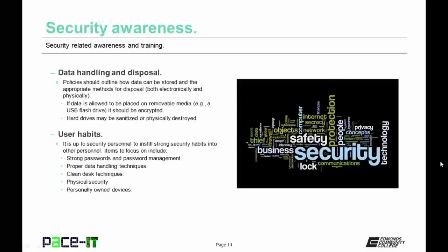Then we have data handling and disposal. Policies should be put in place that specifically outline data handling and disposal methods. These policies should outline how data can be stored and the appropriate method of disposal, both for electronic data and physical data. If data is allowed to be placed on removable media, as in a USB flash drive, it should always be encrypted. That way if the flash drive gets lost, the data is still secure.